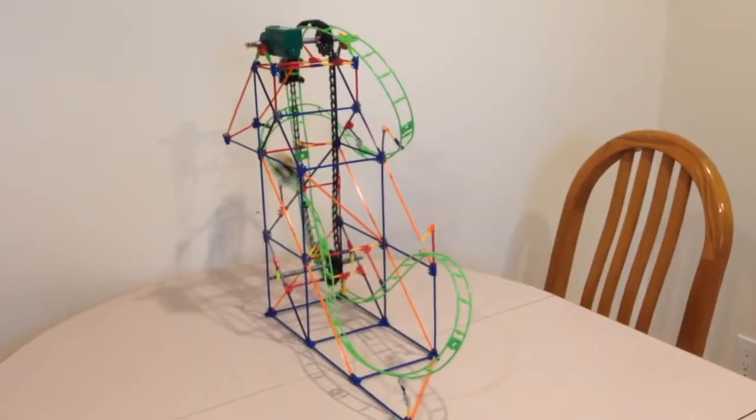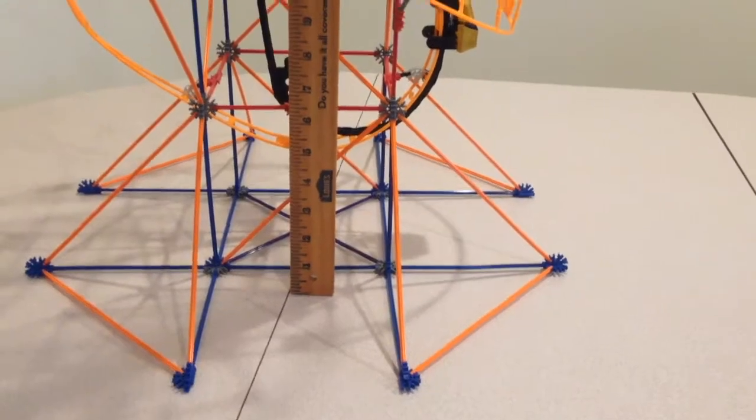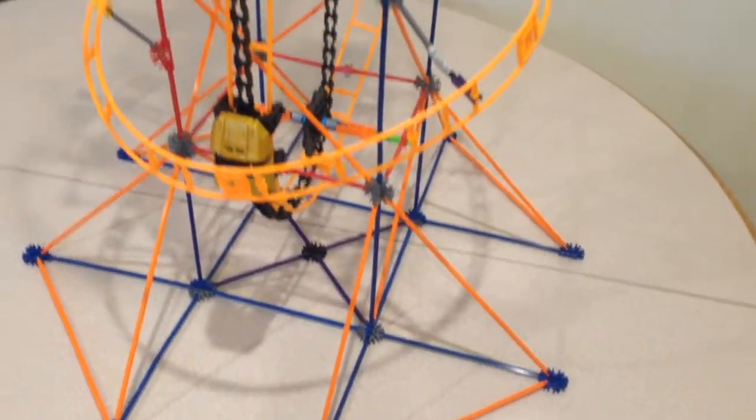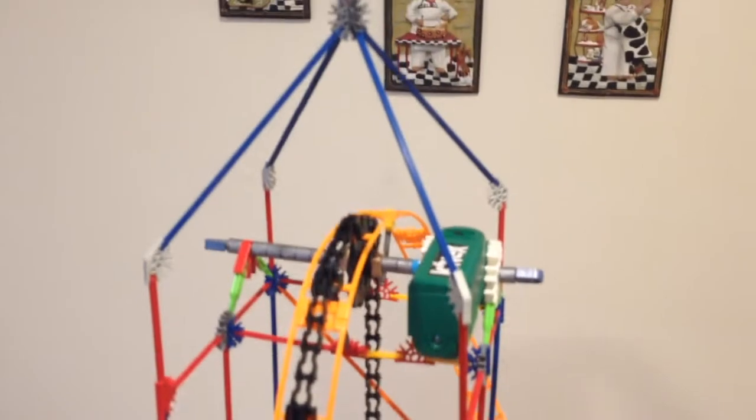K'nex makes a lot of roller coasters. Today I'm going to make this roller coaster called the Star Shooter. It stands over three feet tall, has more than 430 pieces, and K'nex suggests it is for ages seven and up.